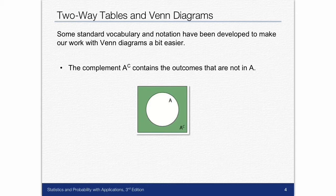So the complement of A, A^C, contains the outcomes that are not in A. So if A is the white circle, the green is the complement of A, everything that's not A.